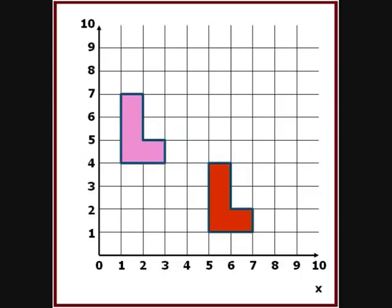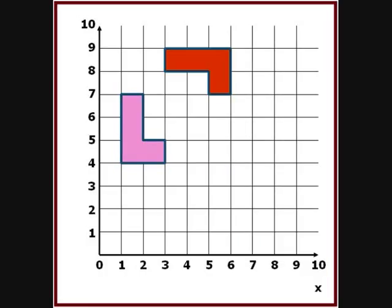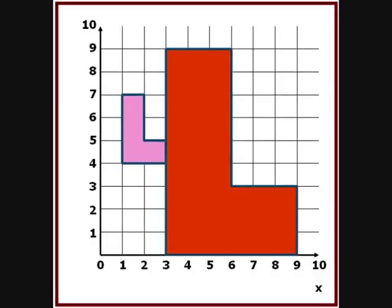These five pictures show the possible types of transformation. In each case the pink shape is positioned in the same place. This is called the object. The orange shapes are the images. The possible transformations are the reflection, rotation, translation and enlargement.